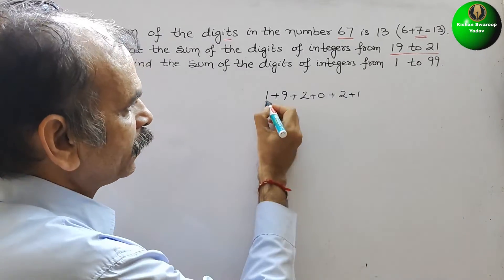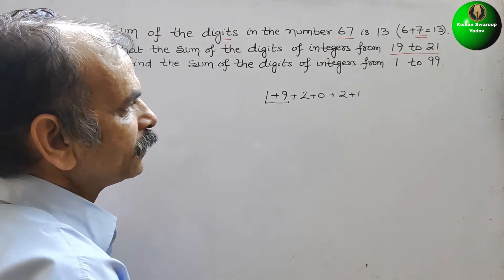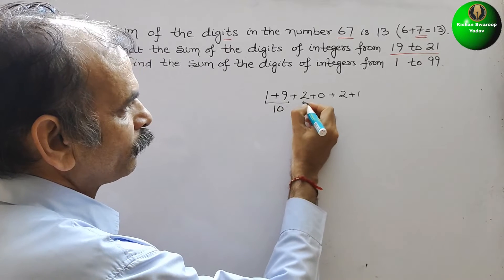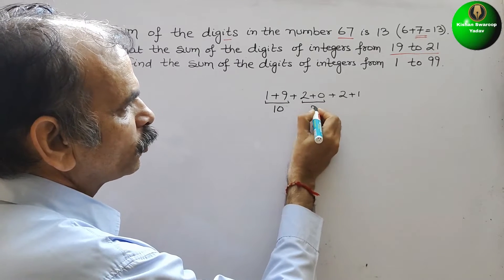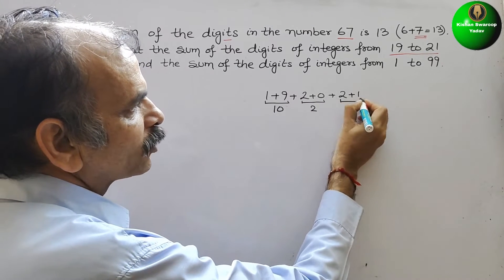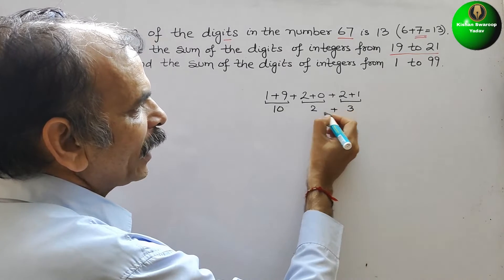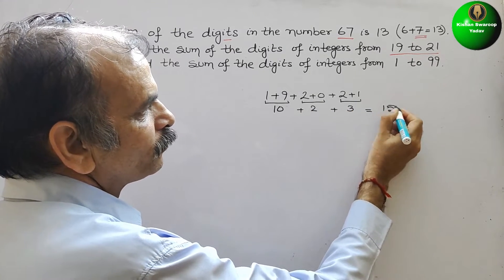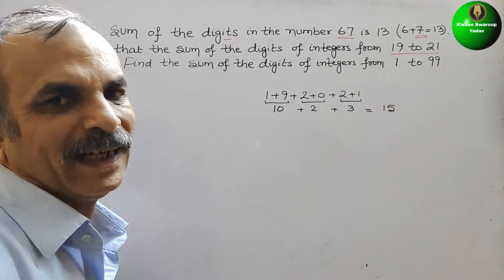So now you can see, 1 plus 9 is 10, 2 plus 0 is 2, and 2 plus 1 is 3. Now again you have to add them, we will get 15. So now we have proved that.